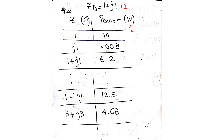We are surprised to see that there is only one value of load impedance ZL for which we get the maximum power absorbed in the load. For any other value you can think of, put that value as ZL, calculate the power, and you will see that it will be less than 12.5W.